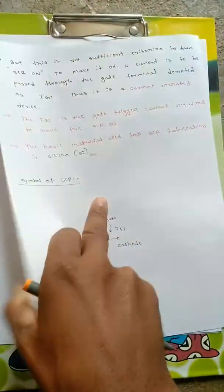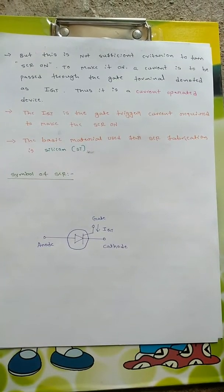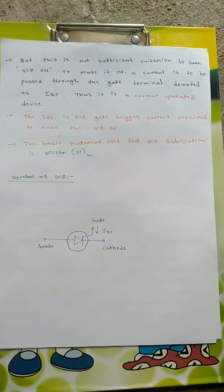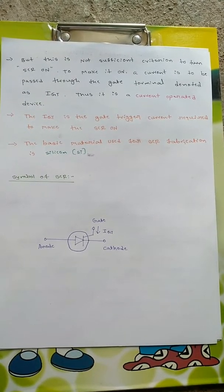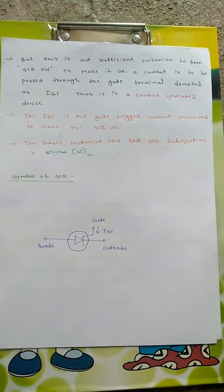But this is not sufficient condition to turn on SCR. To make it on, a current is to be passed through the gate terminal denoted as IG. Thus it is a current operated device.